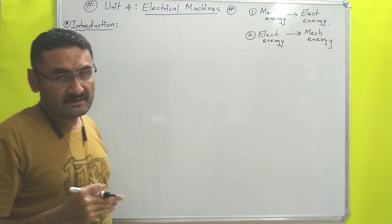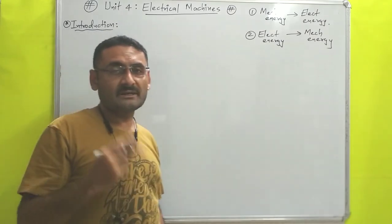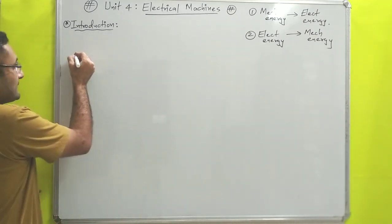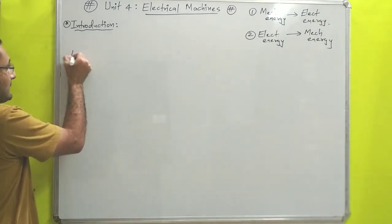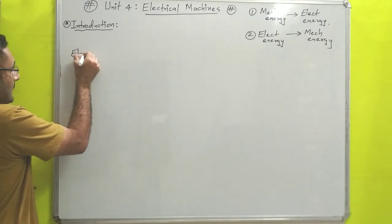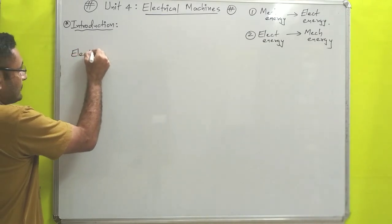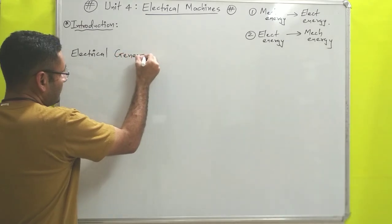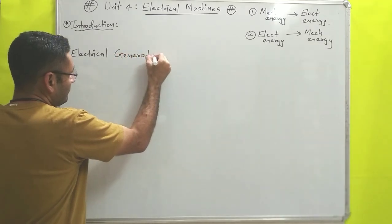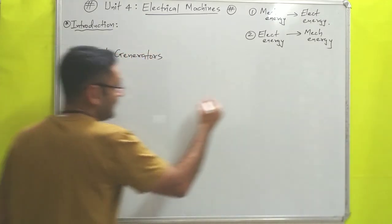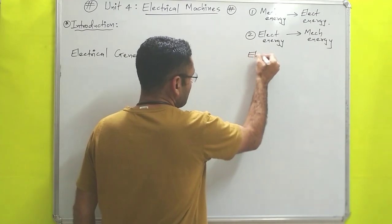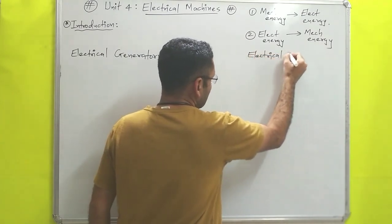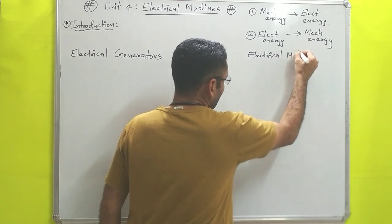In this chapter we will basically study two electrical machines. The first one is known as electrical generators and the next is known as electrical motors.